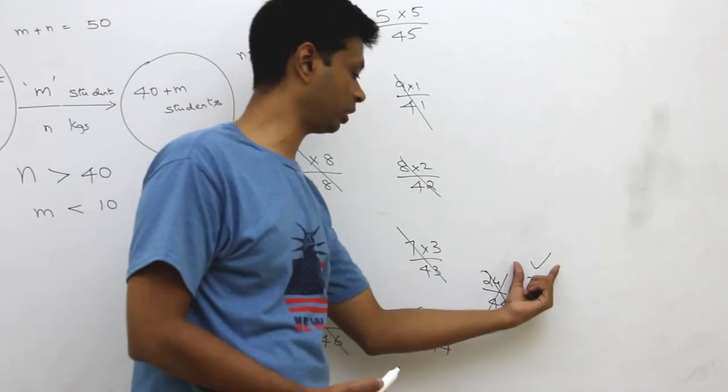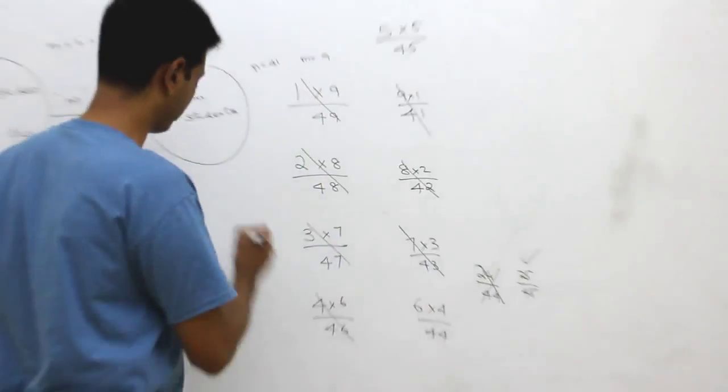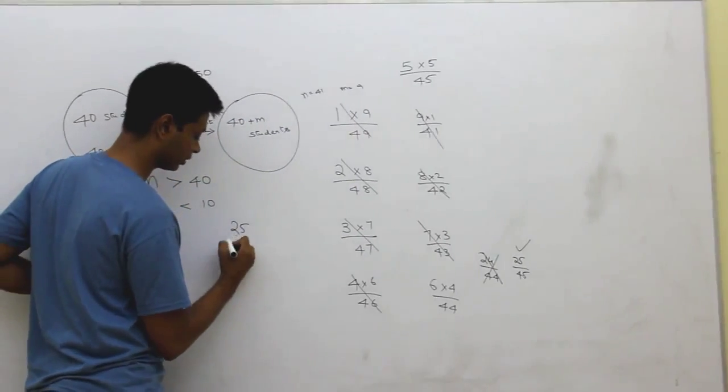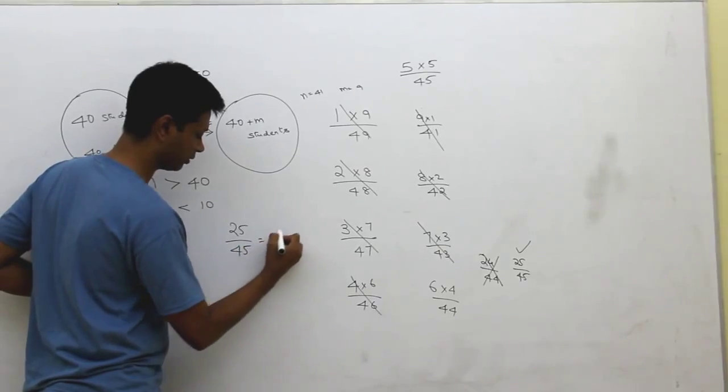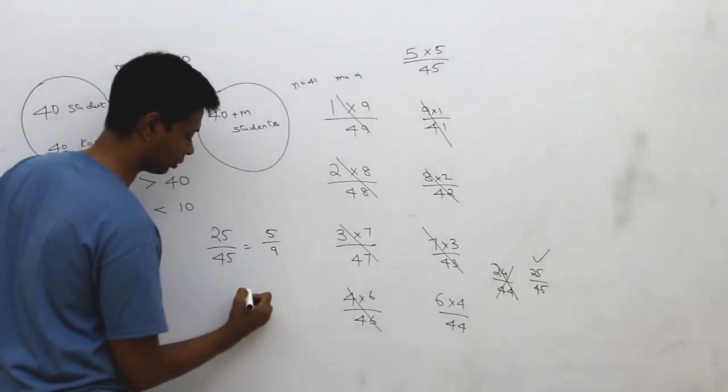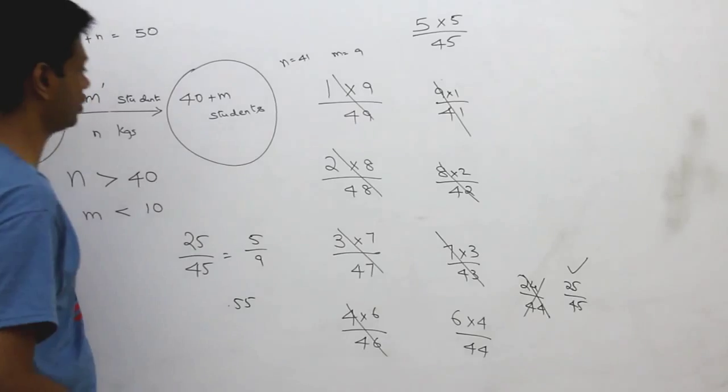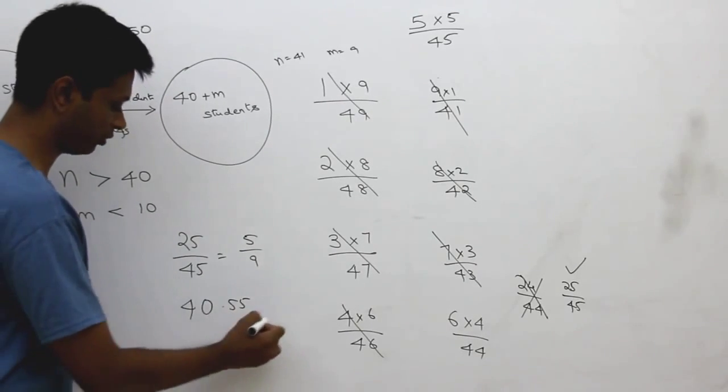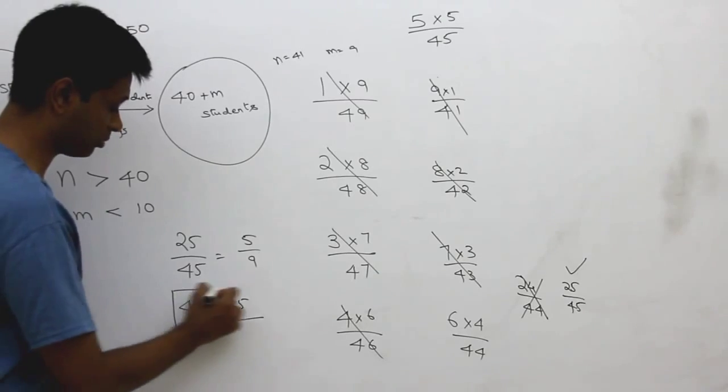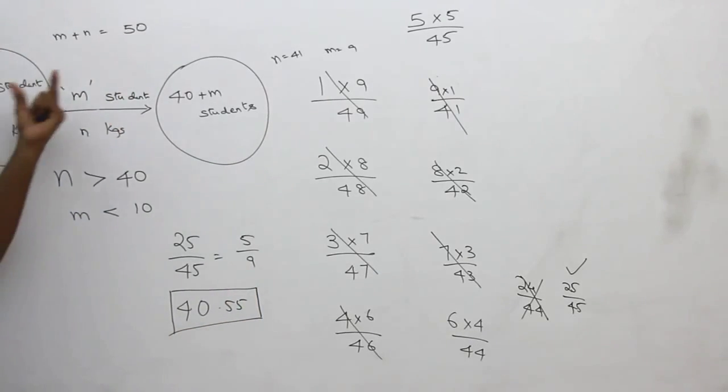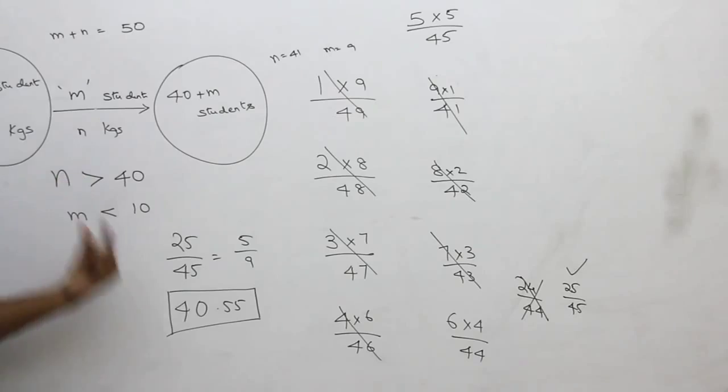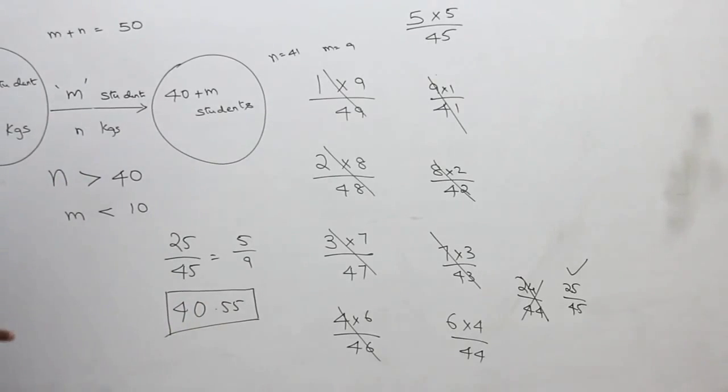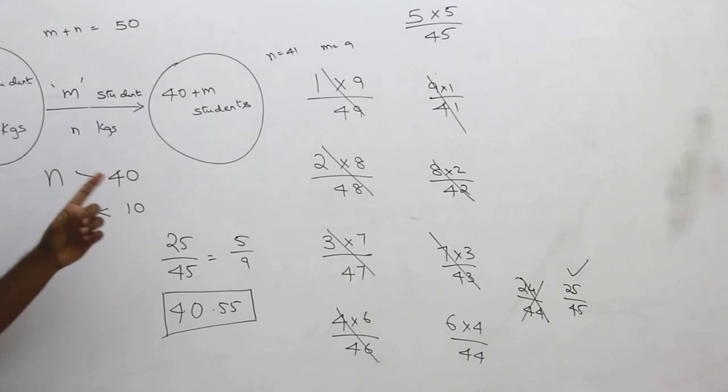So, the average will increase by 25 by 45. 25 by 45 is nothing but 5 by 9 or 0.55. As it was 40 to start with, it will now become 40.55. Or, the maximum possible average when m students join each weighing n kilograms is 40.55. And, that will happen when 5 students each weighing 45 kilograms join.